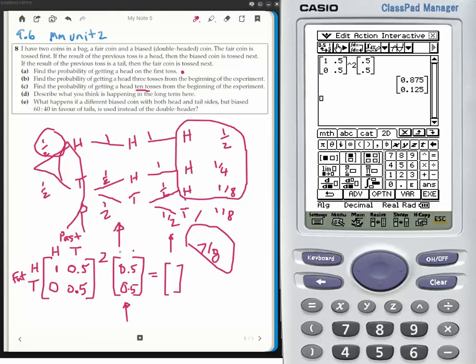Part C says to the 10th. On the 10th, it will be this to the power of 9, because the first is the initial. I keep on applying the transitional matrix after the first. So for the 10th, I'm going to raise this to the power of 9, and that gives me effectively 0.999.